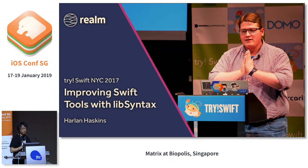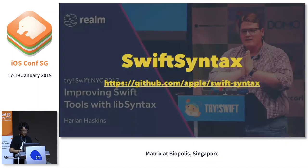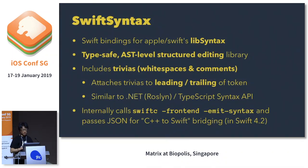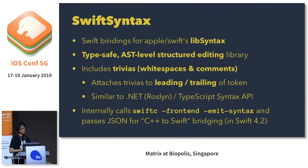In Swift, there are already tools for that. If you've ever watched a talk by Harren Haskins, one of Apple's Swift compiler engineers, he gave a presentation about lib syntax at try! Swift New York 2017. Lib syntax offers an AST-level structured editing library, and it has a Swift binding library called Swift Syntax. In Swift Syntax, we can use Swift instead of C++ to manipulate the AST, and it's very easy to use. Swift Syntax is a type-safe AST editing library. What's great is that AST also stores trivial information called trivia — like white spaces and comments — attached to the leading and trailing of each token. Having trivia in the AST means it's a lossless conversion from the original source code, which is very useful for code formatting.